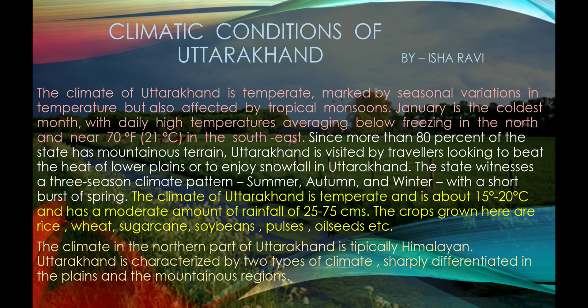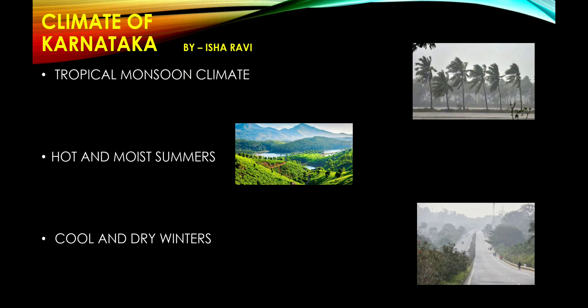Climate of Karnataka: Karnataka has three main climate types — tropical monsoon climate, hot and moist summers, and cool and dry winters. Uttarakhand is divided into two parts: the vast plains and mountainous regions.